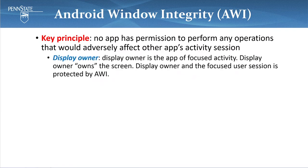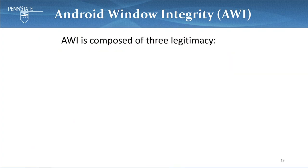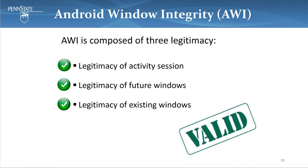To resolve this problem, we propose AWI. The key principle is that no application has permission to perform any operation that would adversely affect other apps' activity sessions. We introduce another important notion called display owner. The display owner is the app of the focus activity. In this example, C2 is the focus activity and C is the display owner, meaning that the display owner has higher privilege in terms of window operations. The display owner and the focus user session are protected by AWI following three legitimacy criteria: legitimacy of activity session, future windows, and existing windows.